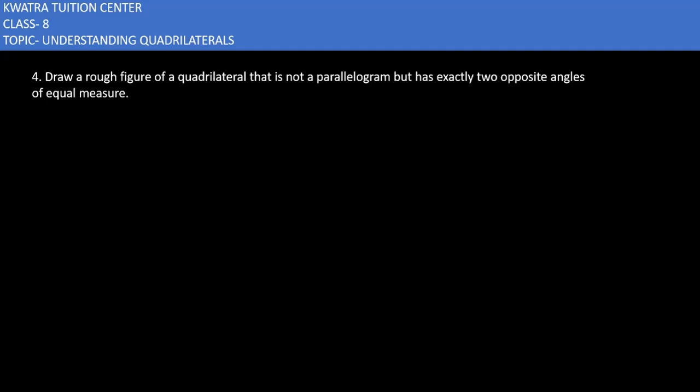Let's start with question number four. It says draw a figure of a quadrilateral that is not a parallelogram, but has exactly two opposite angles of equal measure.